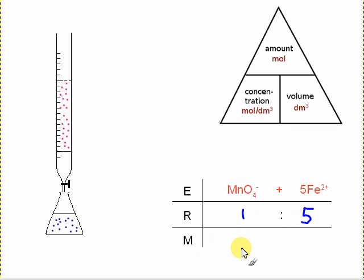If I can work out the amount of, say, this one, the manganate, to work out the amount of the iron, I just multiply that number by five. Coming back to the apparatus here, I might have a volume which I know and a concentration which I know.